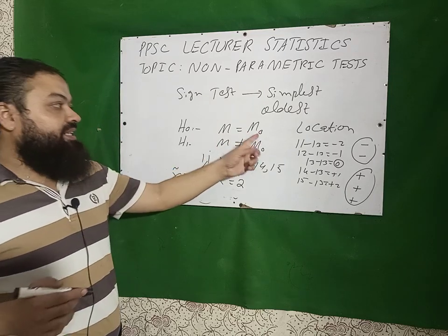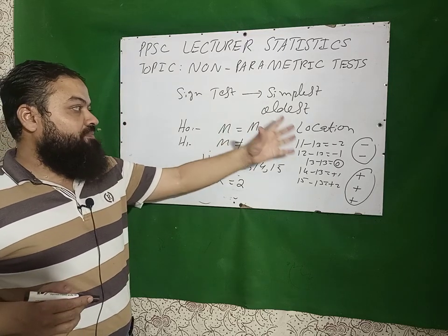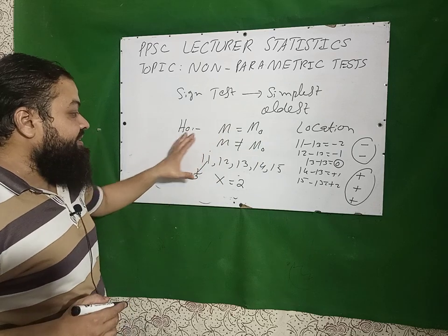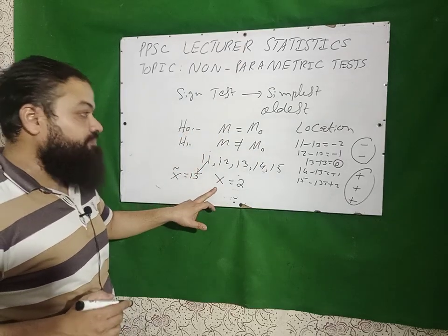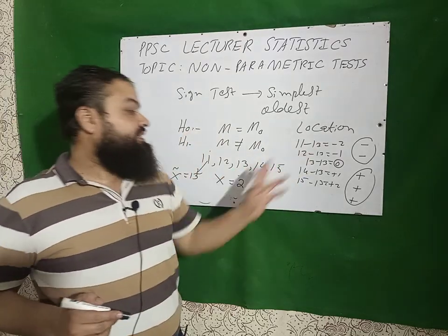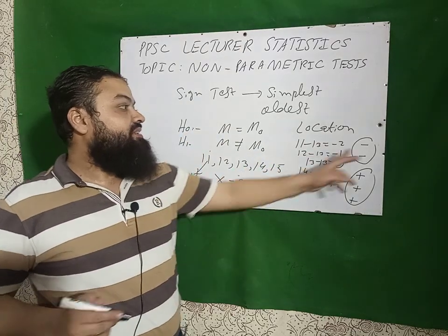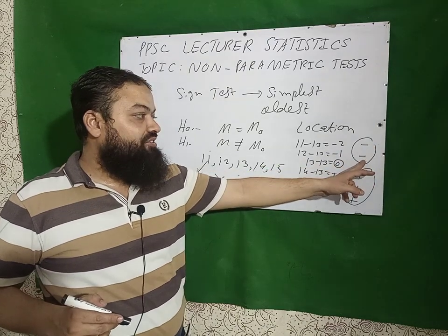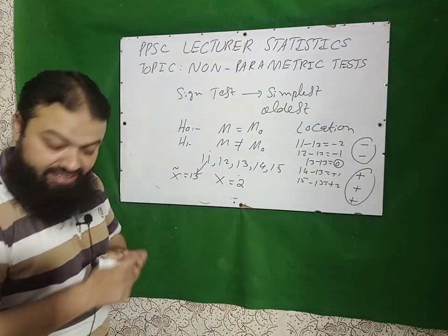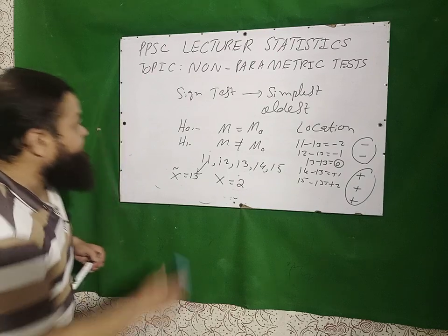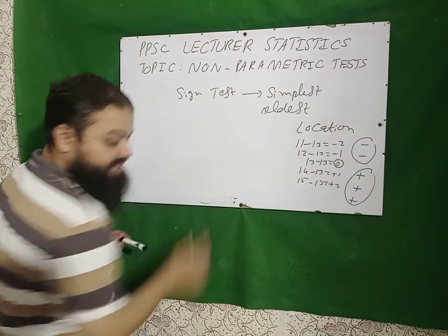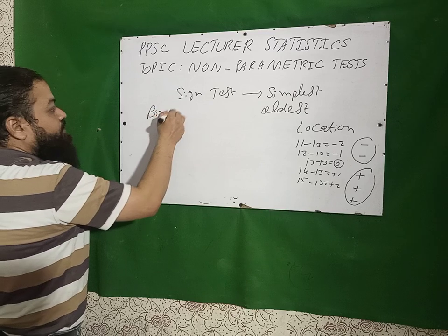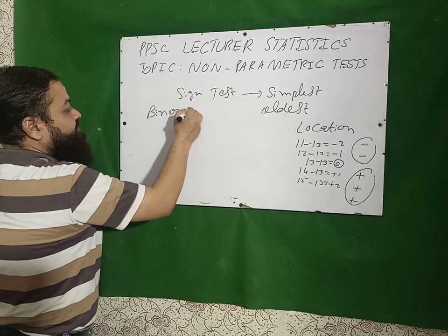A very important question: in the sign test we do the testing of the median (location parameter). The test statistic x contains the less frequent sign. The distribution of x is always the binomial distribution — a very important MCQ.